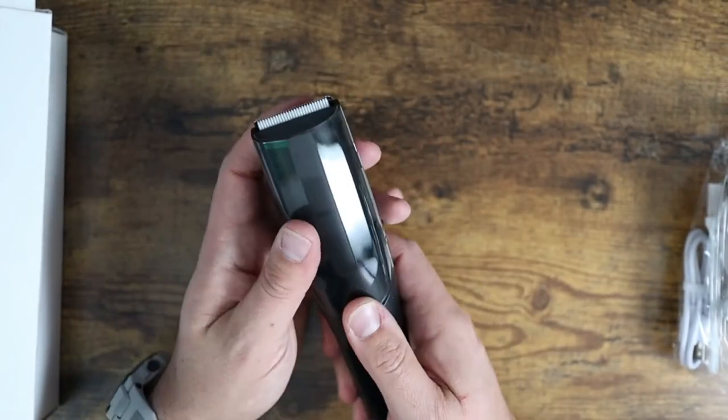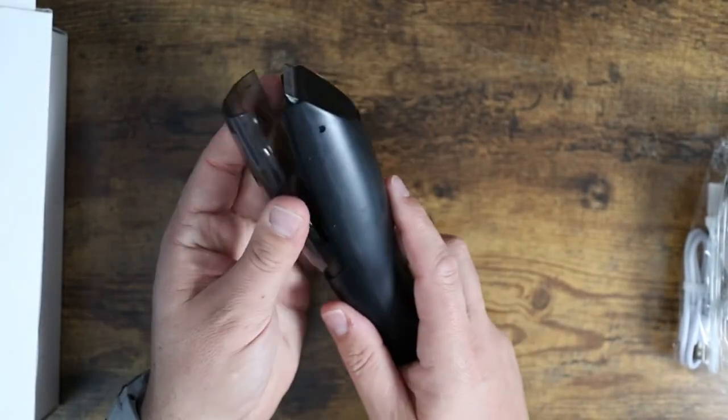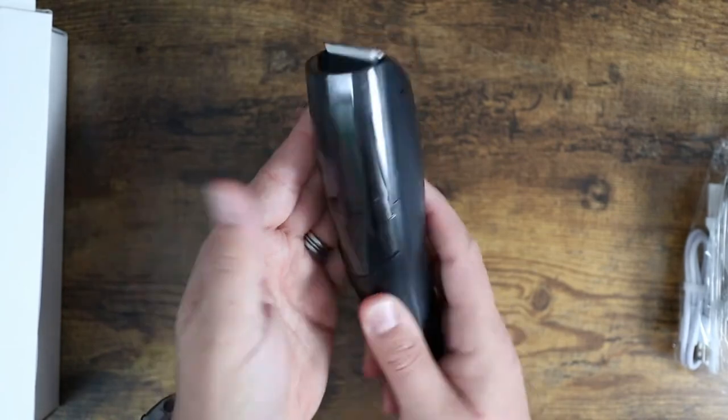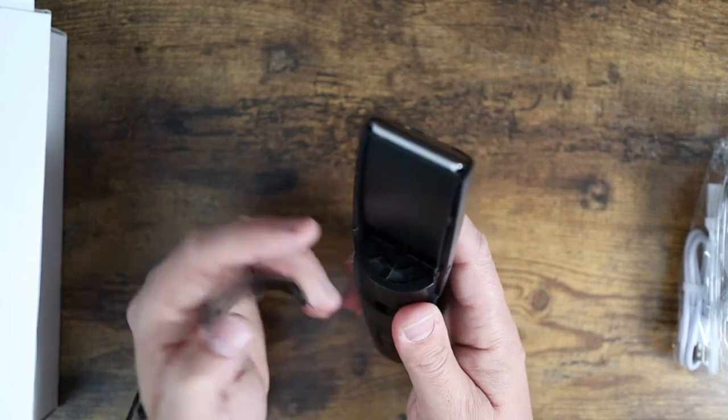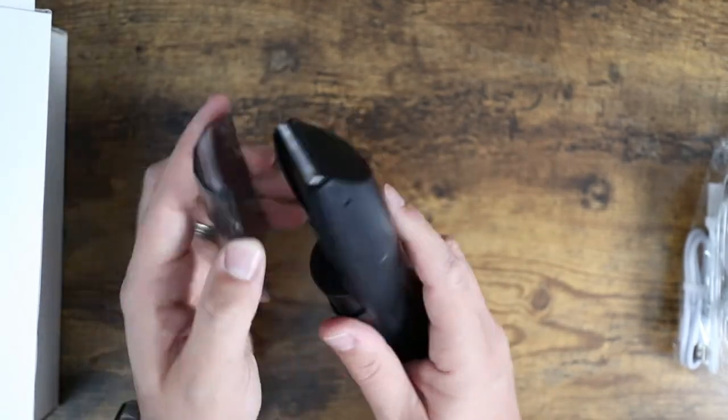It's got a nice little handle, very easy to use. This is the guard. This is where the hairs are actually trapped inside. This actually comes off if you want to clean it out. You can see the little suction fan down in here, and then you have your blades right there.